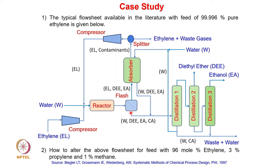In the splitter, some ethylene and contaminants are removed as a purge while the recovered ethylene is recompressed to 69 bar and recycled back to the reactor. The liquid from the flash unit, containing water, diethyl ether, ethanol, and croton aldehyde, is mixed with the water stream from the absorber and fed to a series of three distillation units. The first separates water and croton aldehyde as bottoms; the second separates diethyl ether; and the third separates ethanol as the top product with remaining water removed as bottoms. This is the typical flow sheet when ethylene purity is 99.996 percent.